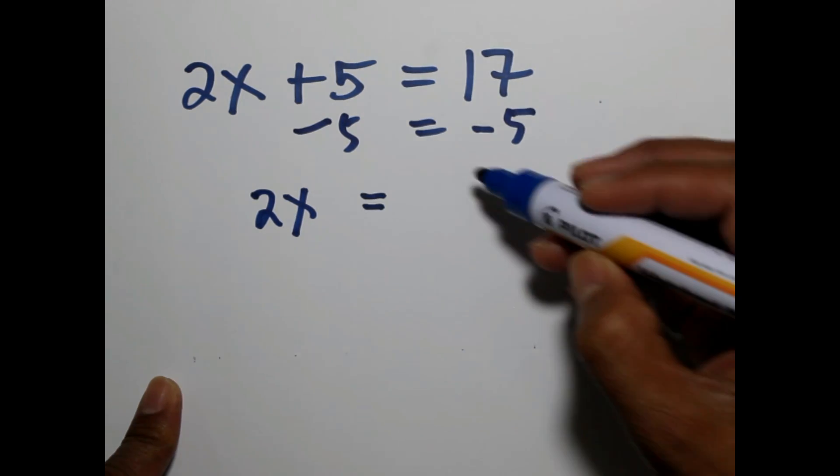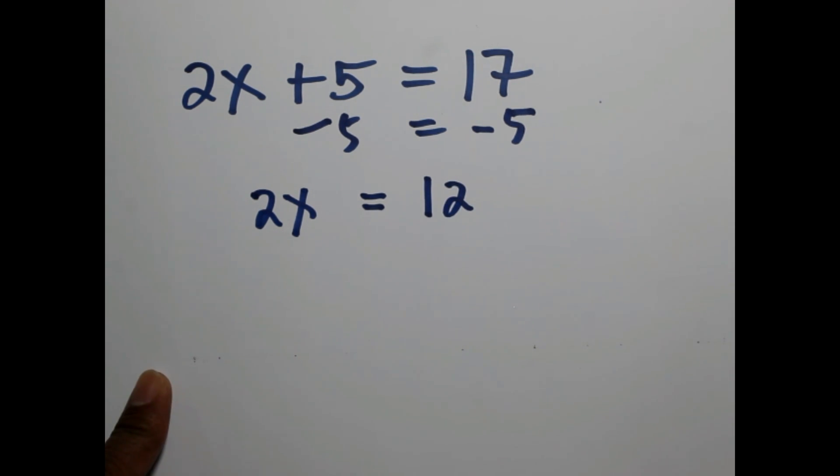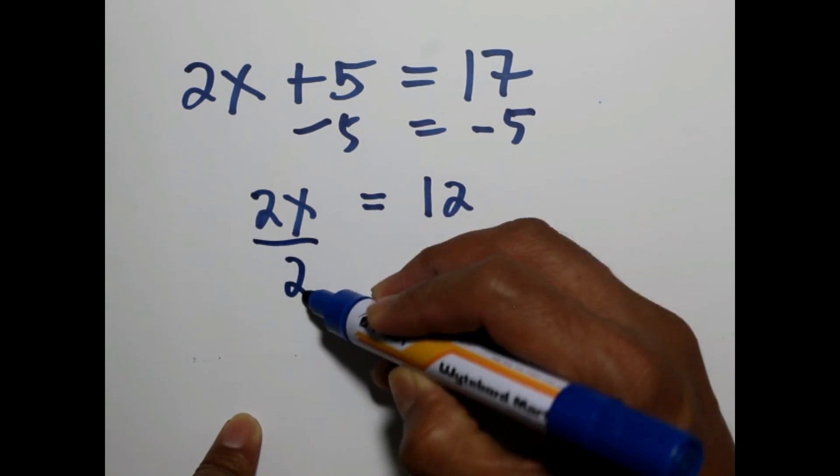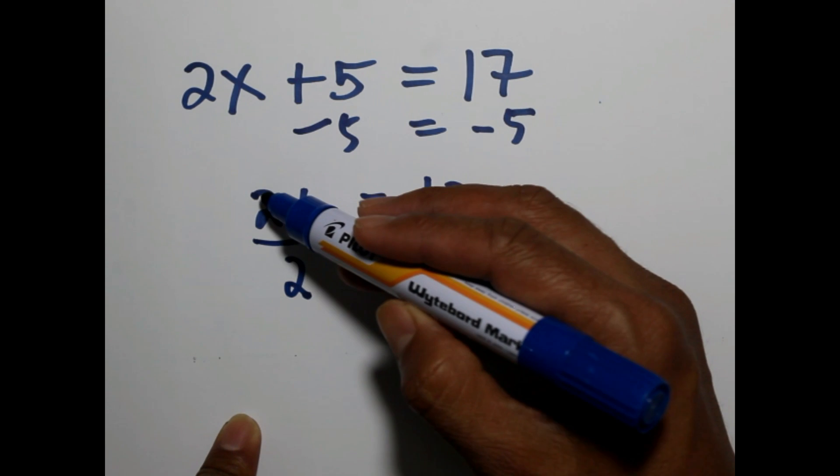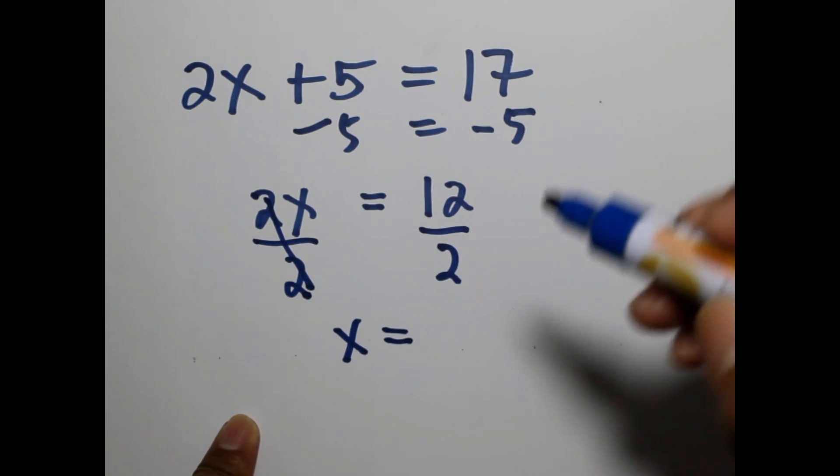Take note that multiplication and division, addition and subtraction. So 2x means we are multiplying 2 to x. To eliminate 2, we will divide both sides by 2. Divide 12 by 2. Cancel 2, so x now is equal to 12 divided by 2, which is 6.